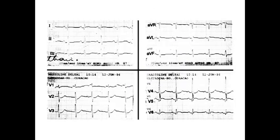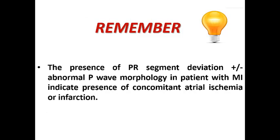Let's look at this ECG example. We can see PR segment depression in leads I, II, III, and V4, with reciprocal PR segment elevation in V1 and aVR — ECG criteria suggestive of atrial infarction. This is mostly right atrial infarction, and we'll explain why shortly. The presence of PR segment depression and elevation as reciprocal changes in a patient with MI — plus or minus abnormal P wave morphology — indicates concomitant atrial ischemia or infarction. Pay attention to these ECG criteria.